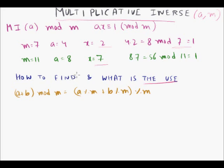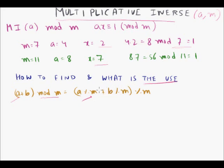In modular arithmetic, many programming contest problems — like ACM problems — involve very large integers that overflow. For addition: (a + b) mod m = ((a mod m) + (b mod m)) mod m. So even if a + b overflows, you can reduce a and b individually modulo m. The same applies to subtraction: (a - b) mod m = ((a mod m) - (b mod m)) mod m, which also handles negative overflow.